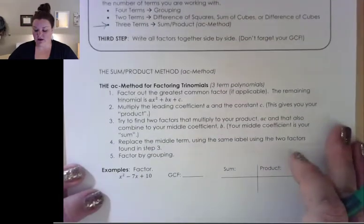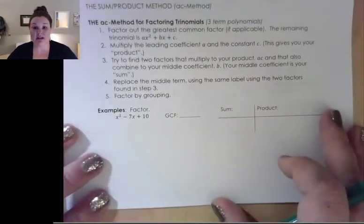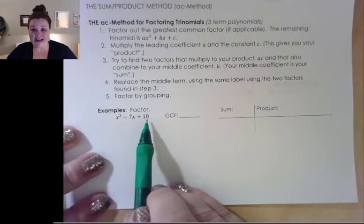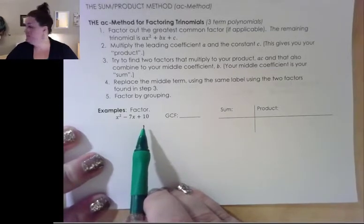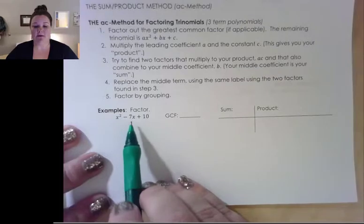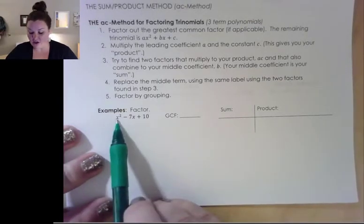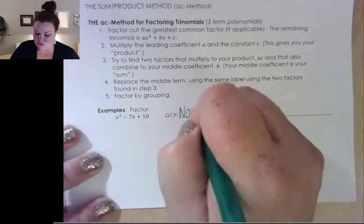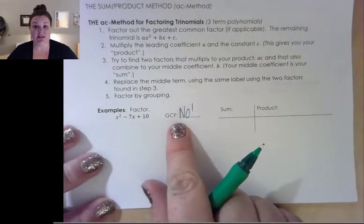There is a description of how to work through this method — I'm not going to read through it; you can read through it on your own if you need to revisit it. I'm just going to show you by example. We have three terms, so we know we're going to use the AC method, or the sum-product chart — same thing. First thing we look for, always no matter what, is a greatest common factor. All three terms do not have anything in common, so there is no GCF on this one.